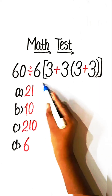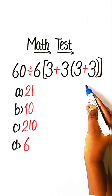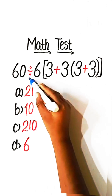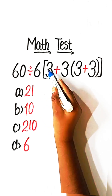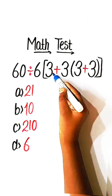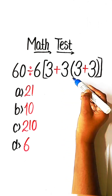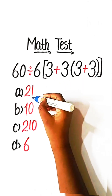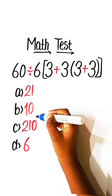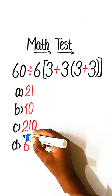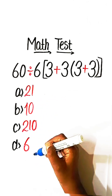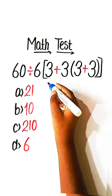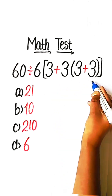Hello everyone. In this video we will solve this math expression: 60 divided by 6, under bracket 3 plus 3. The expression 60 divided by 6(3+3) equals what? The options are 21, 10, 210, and 6. Let's solve this.